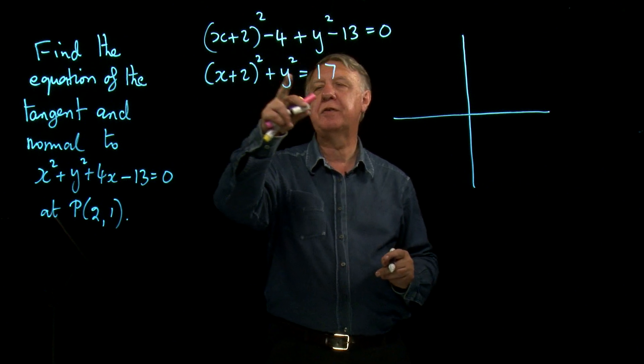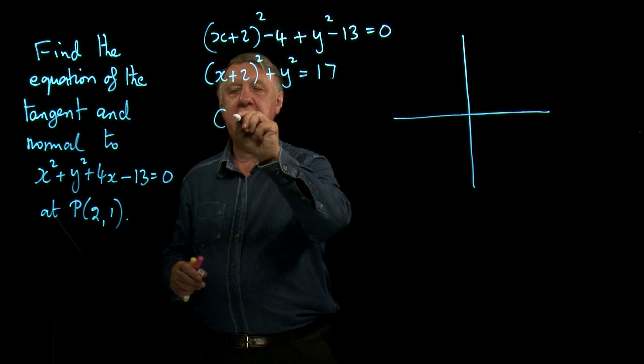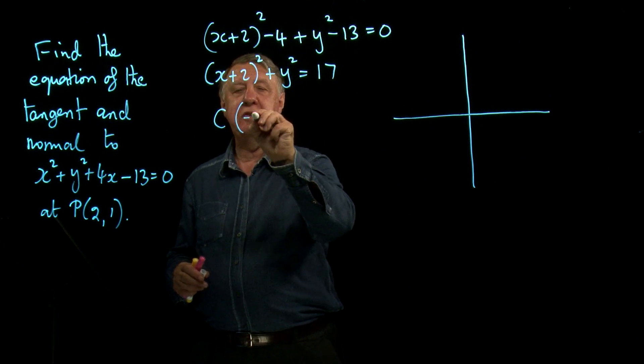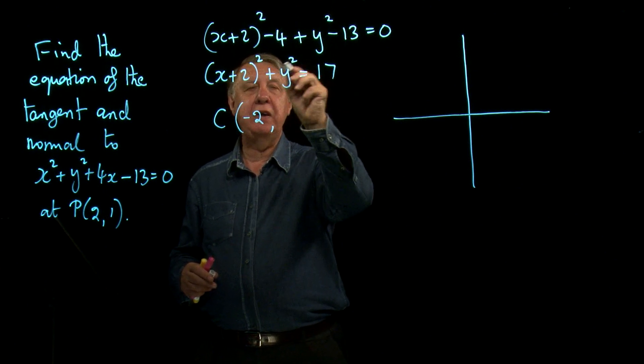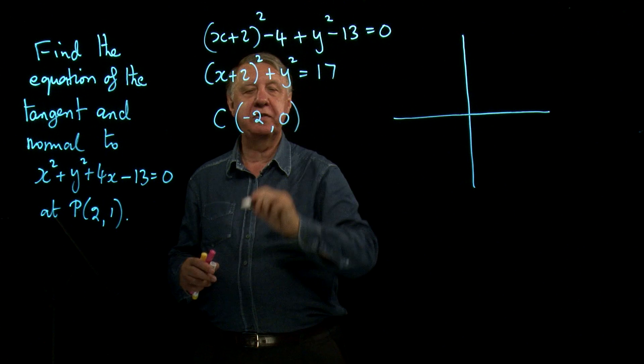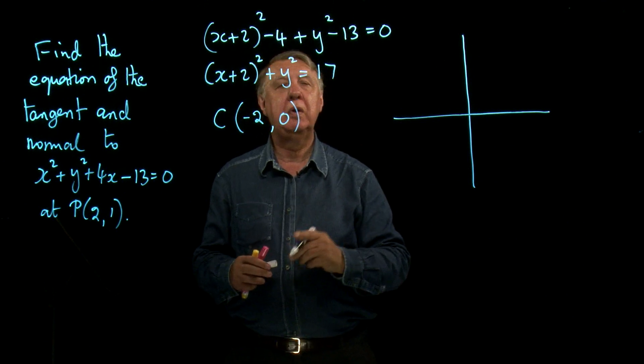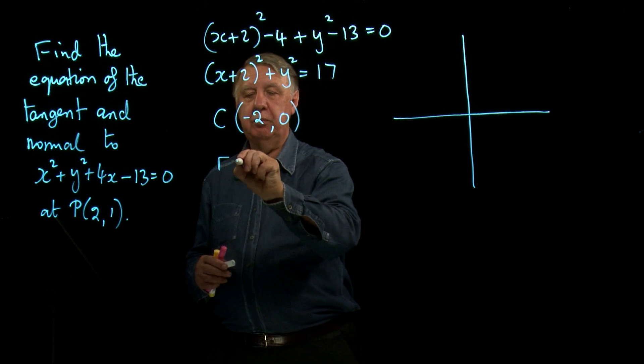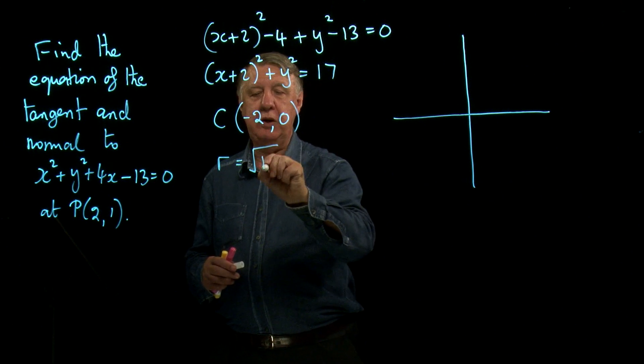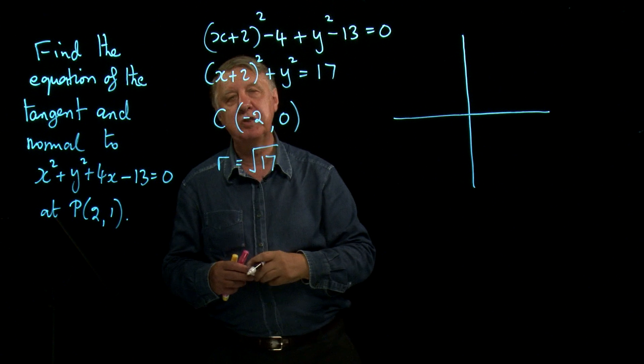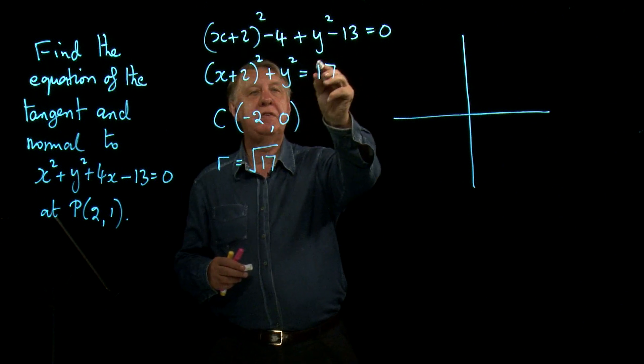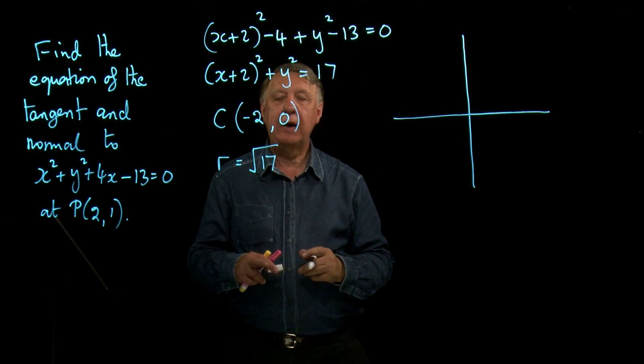From this then I can look at this and I can see that the center will be negative 2. There's nothing inside the y bracket, so the center of the circle is negative 2, 0. And the radius is the square root of 17 because this number here is r squared.